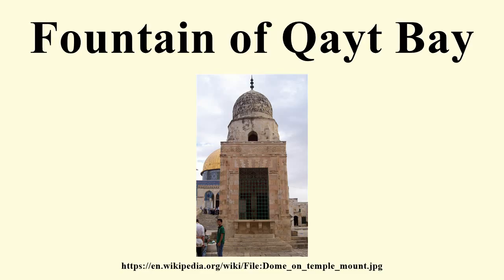The fountain was originally constructed in 1455 on the orders of the Egyptian Sultan Al-Ashraf Safad Dinanal. In 1482, however, Sultan Qayt Bay had it rebuilt, and the structure is named after him. The labour of erecting the building was done by Egyptian and Circassian craftsmen under the supervision of a renowned Christian architect. The fountain was constructed in a style mostly seen in Egypt.